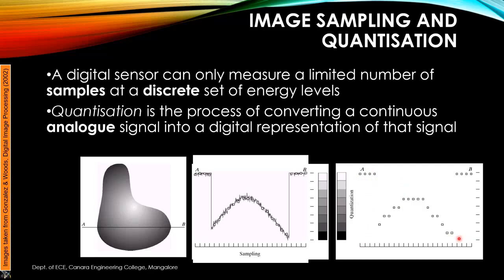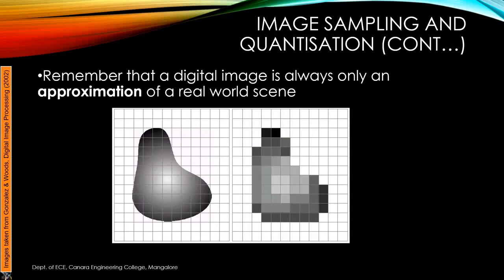We must always remember that digitization is an approximation of the real-world scene — it can never be an exact replica. If you zoom into the final image at a fine level, you will see pixelation happening no matter how many bits are used. At the finest edges you will always see square pixelated edges.